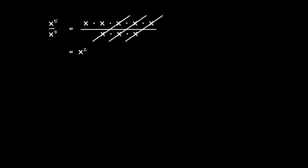How does the number 2 relate to 5 and 3? Notice this is equal to x to the 5 minus 3. Now for a different but related question: what if we take x cubed and x to the power 5 and divide them in the opposite order? What will happen?